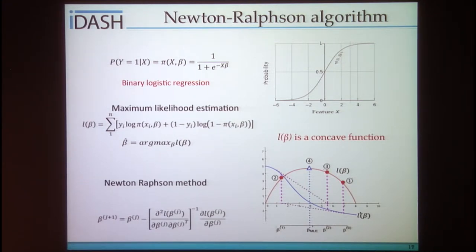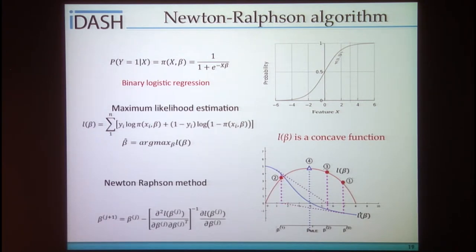The Newton-Raphson algorithm starts from a random point on the log-likelihood function, finds its corresponding point in the first derivative L-prime, follows the steepest direction to point 0.2, then finds the next corresponding point in L-prime and follows the steepest direction to point 0.3. At each iteration, the points get closer to the global optimum, point 0.4.